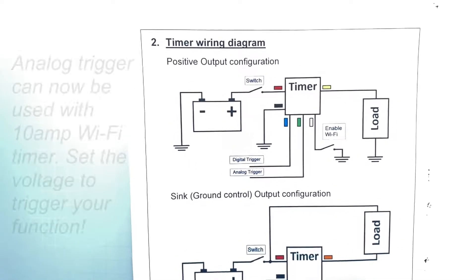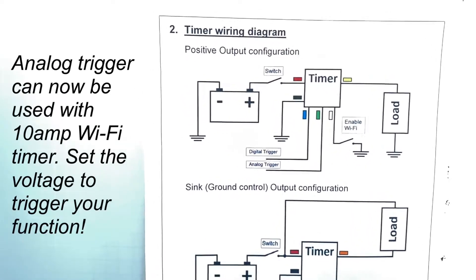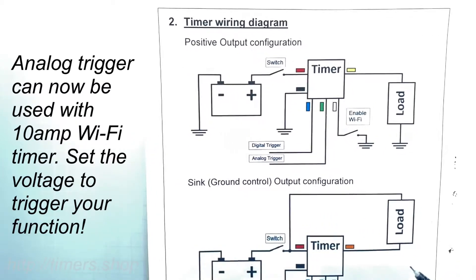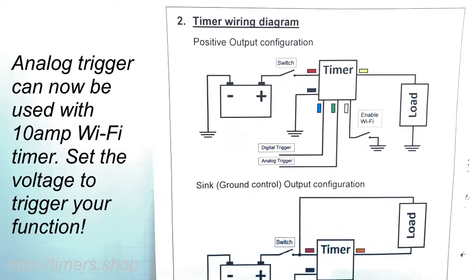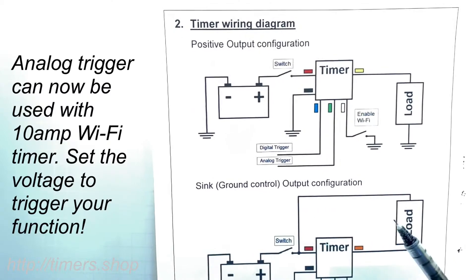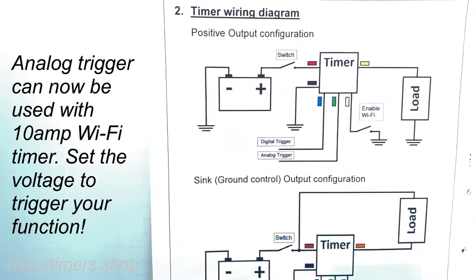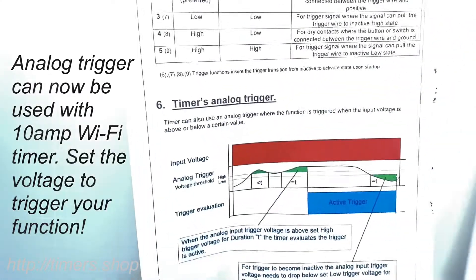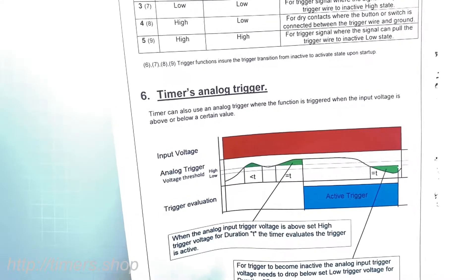We just released an update where we added the analog trigger. Like with a digital trigger where you can trigger your function with the rising or falling edge, with the analog trigger you can trigger your function with the voltage levels.